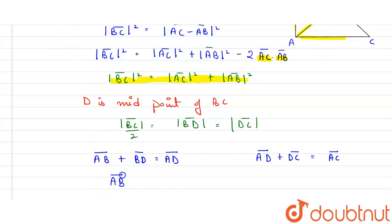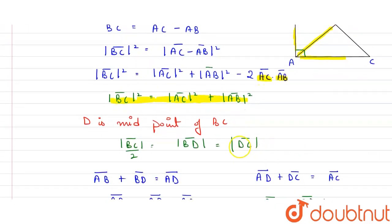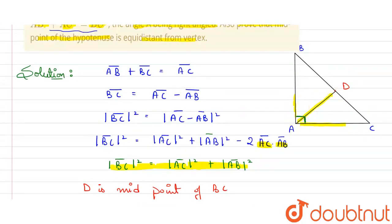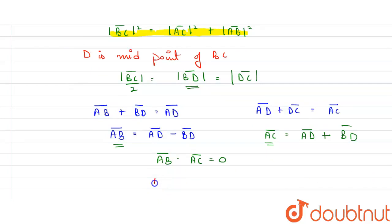From these, AB vector equals AD vector minus BD vector, and AC vector equals AD vector plus DC vector. Since DC vector equals BD vector, AC vector equals AD vector plus BD vector. Since angle A is 90°, the dot product of AB vector and AC vector equals zero. Substituting: (AD minus BD) dot (AD plus BD) = 0.